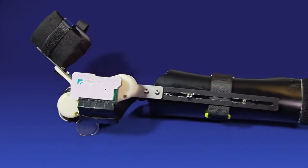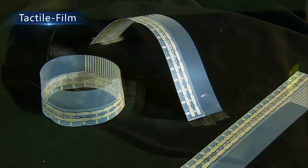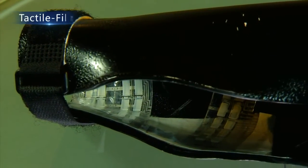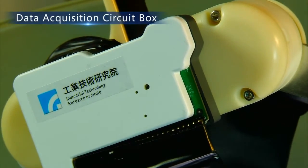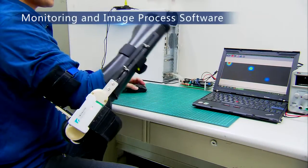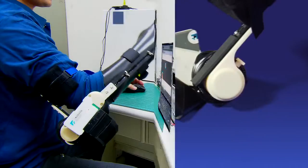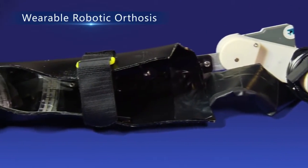HSTS consists of four primary components: the tactile film attached to the inner side of the bracket, the data acquisition circuit box, the monitoring and image process software, and the wearable robotic orthosis.